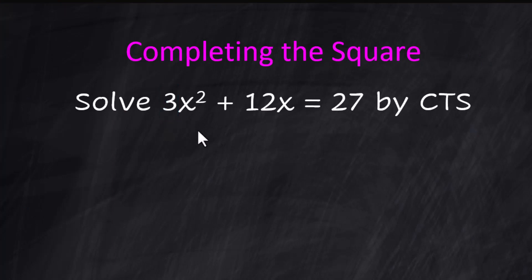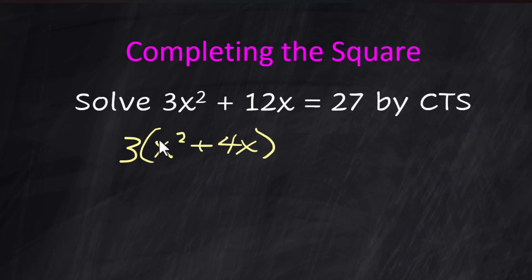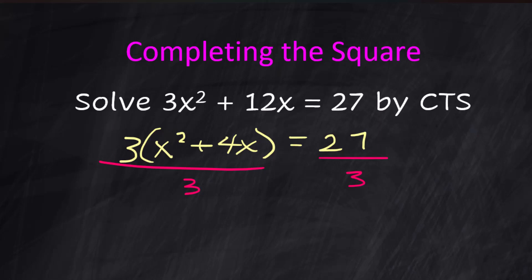If all your terms are mixed up, rewrite them in descending order: x² first, then x, then the constant. To handle a leading coefficient other than 1, factor it out and then divide both sides of the equation by that factor. For example, 3(x² + 4x) = 27. Dividing both sides by 3 gives x² + 4x = 9. That's simpler, and now we can complete the square normally.